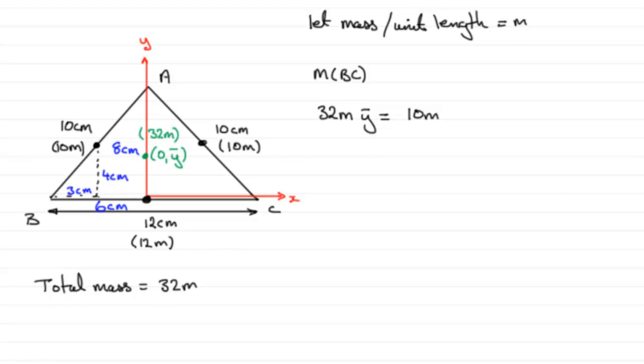So back onto this moment then, the total moment 32m times y-bar is going to equal 10m for this particle times this distance, which is going to be multiplied by 4, and then plus, because of the symmetry of the problem, it's going to be the same again here, 10m multiplied by this distance down to BC, which would be 4. We could cancel out m, it's in every term.